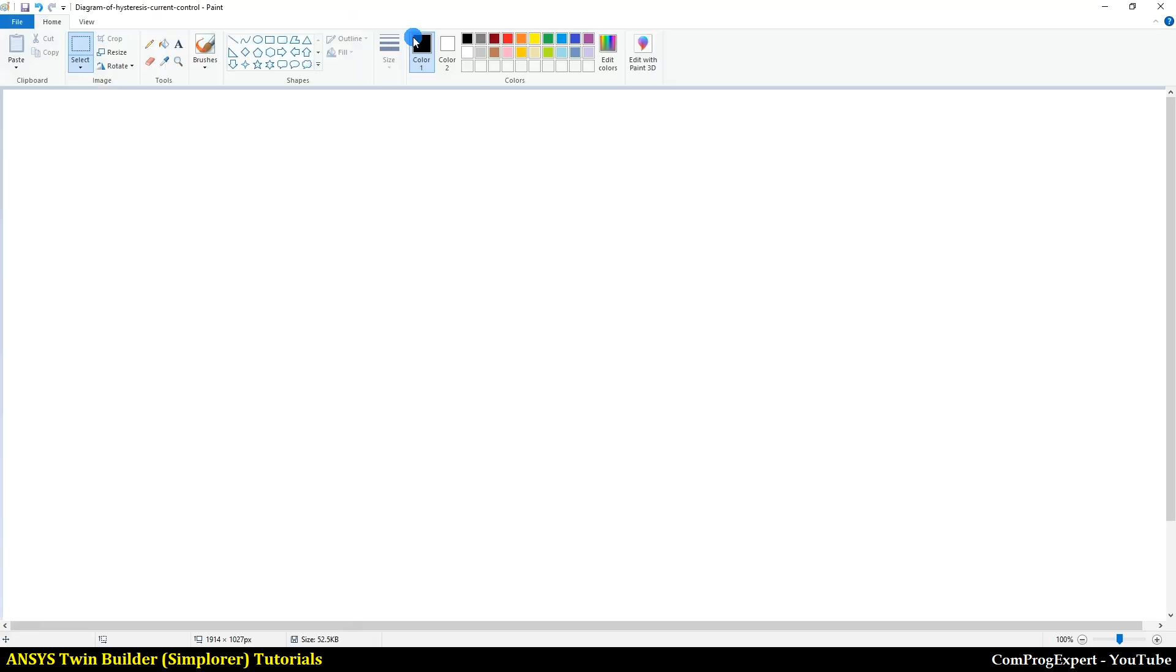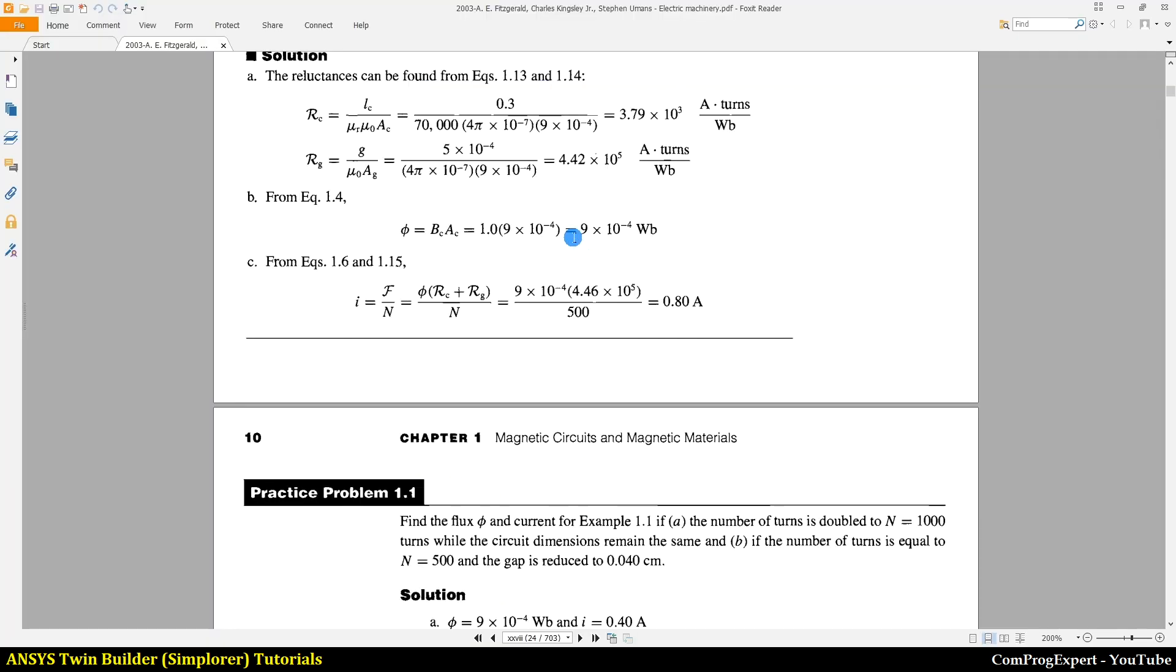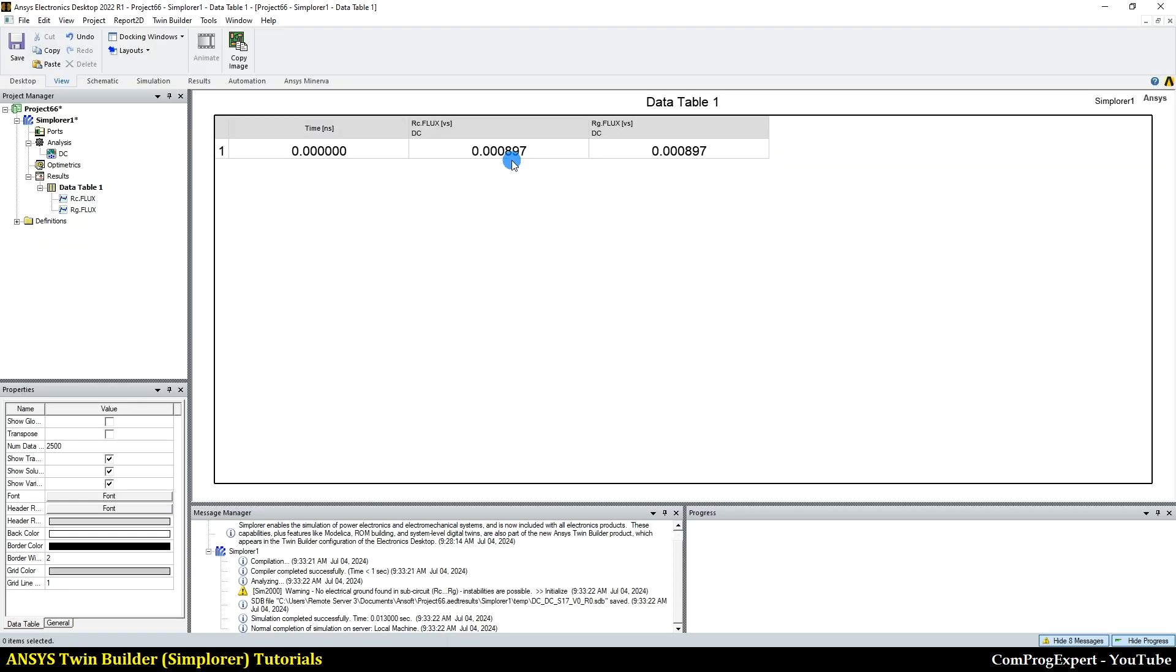Okay, the unit here is volt second, that is Weber, right? We know that the induced voltage is d lambda dt. The unit here is volt, this unit is second, so volt second is Weber. The number that we have here is 9 times 10 to the power minus 4, or this is equal to 0.9 milliWeber. That is the same as this one, right? This is close to 0.9 milliWeber.